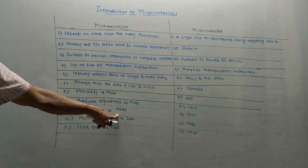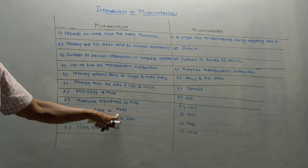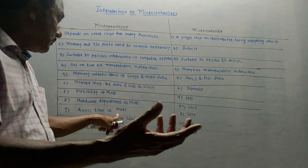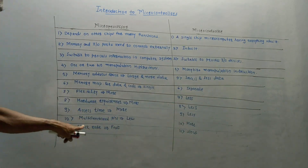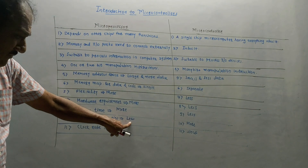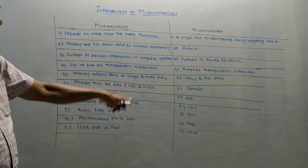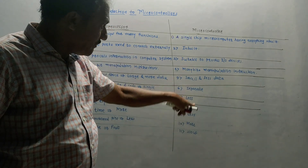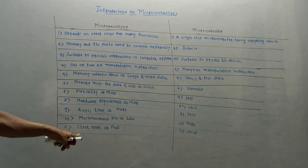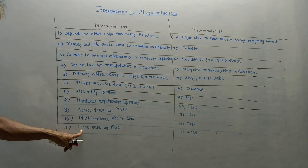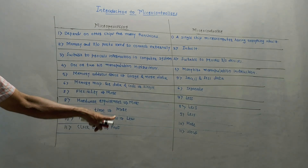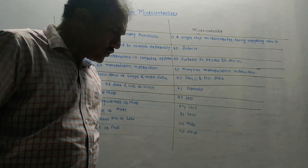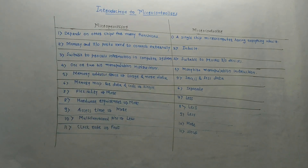The reason access time is more for microprocessor is because we need to access external peripheral devices. Less multifunction pins are required for microprocessor, whereas more multifunction pins are required for microcontroller. The clock rate is fast in case of microprocessor, whereas it is slow in case of microcontroller.